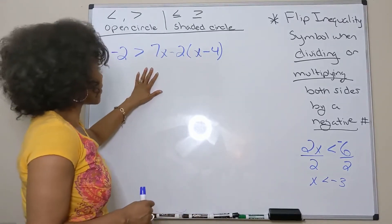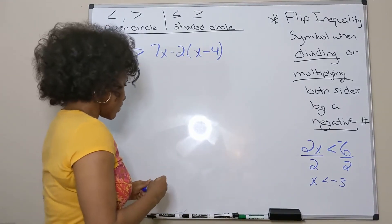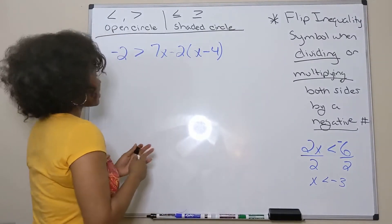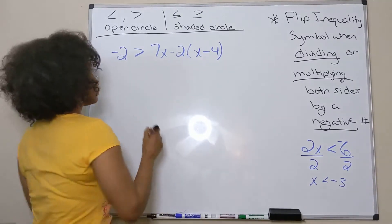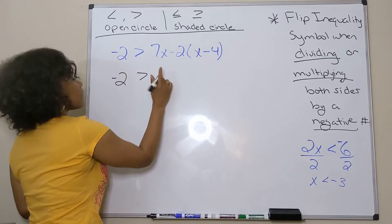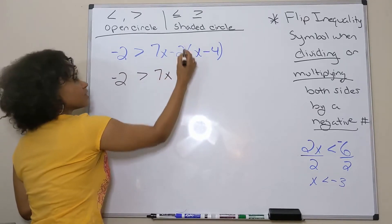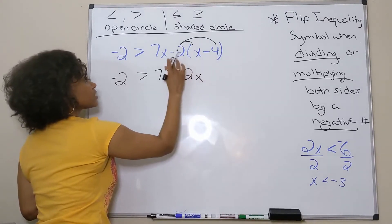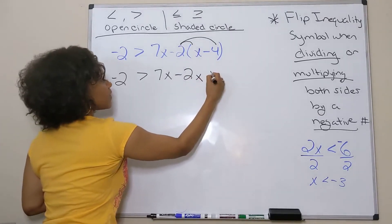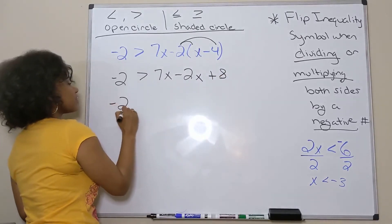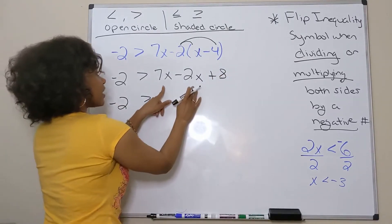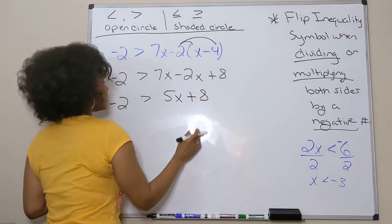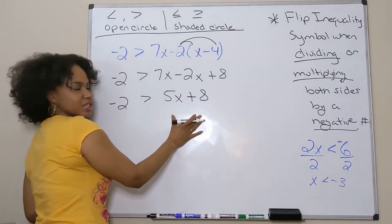So I have a sample problem right here. Let's go ahead and work this problem out and graph the solution. We solve it the same way we solve multi-step equations using inverse operations. I bring down my 7x and apply the distributive property: negative 2 times x is negative 2x, and negative 2 times negative 4 is positive 8. Bring down my negative 2. Combining like terms, 7x minus 2x is 5x plus 8.